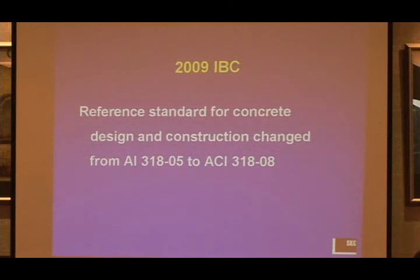The topic is significant 2009 IBC chapter 19 changes. I started with the IBC rather than ACI 318 because that's why we need to be concerned about these changes. IBC chapter 19 as you know today references 318-05, and when the 2009 IBC becomes the basis of your code, the reference document will be 318-08. That would mean significant changes in the standard itself, which is what I will discuss. It will also mean a somewhat different look to chapter 19 of the code, because chapter 19 today makes a number of amendments to ACI 318-05 — precisely 16 amendments at this stage in the 2006 IBC.